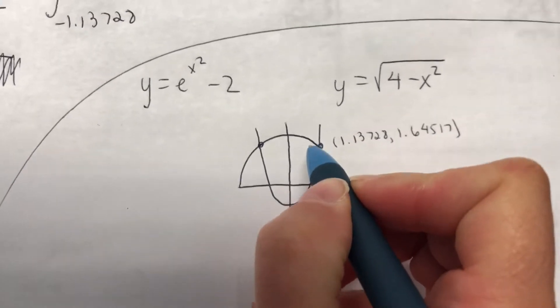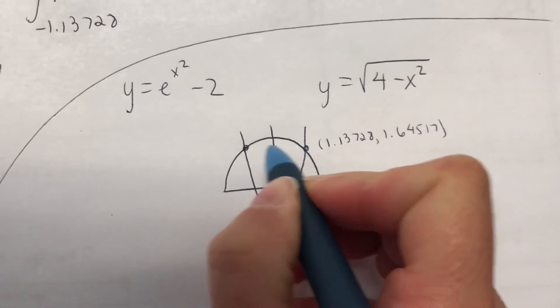Number 12 really stinks if you want to do it with respect to y. So then you would have to do a right minus left.